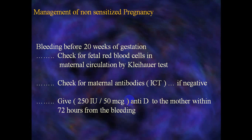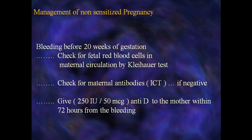Before 22 weeks of gestation, any vaginal bleeding during the first, second, or third trimester may lead to antibody formation in the maternal circulation, attacking the current or subsequent fetus. Check for fetal RBCs in maternal circulation using the Kleihauer-Betke test and check for maternal antibodies by indirect Coombs test. If negative, give 200-250 international units (50 micrograms) of anti-D to the mother within 72 hours of the bleeding.